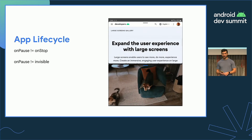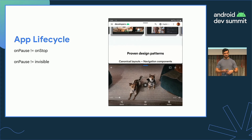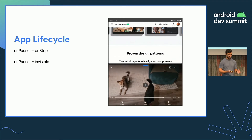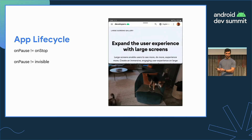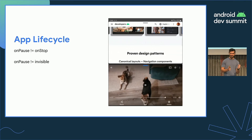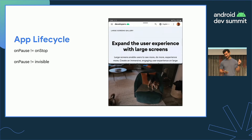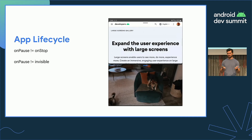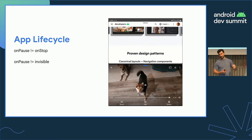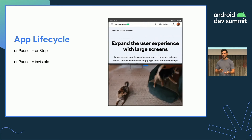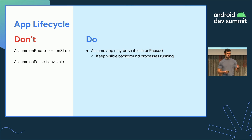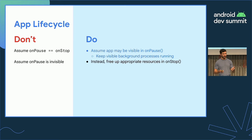Related to this is thinking about activity lifecycle events intentionally. For example, if you're watching a video app and try to take notes in another app, but the video pauses every time you switch focus — that's a very frustrating user experience. Think about how you want your application to behave when it's not the only app on the display. You should be freeing up appropriate resources on stop and thinking about the end-to-end experience when having multiple things on the display.